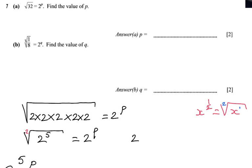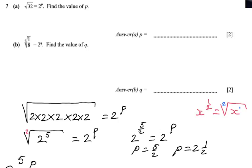So I rewrite it as 2 to the power 5 over 2, which equals 2 to the power p. The 5 goes to the numerator and 2 to the denominator. Since the bases are the same, I can say p equals 5 over 2, which is 2 and a half. So p equals 2 and a half — that is your final answer.